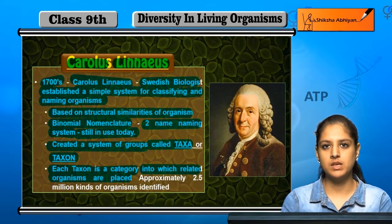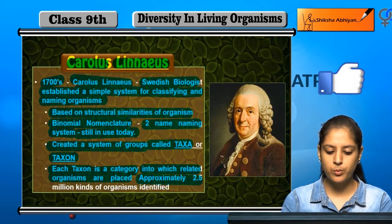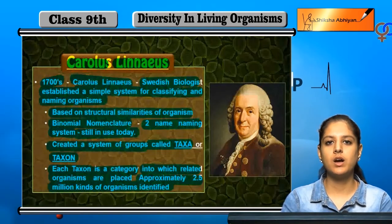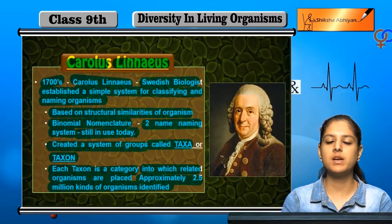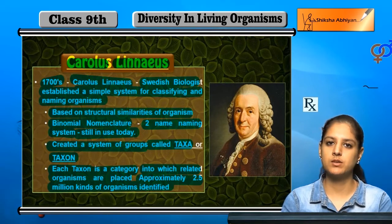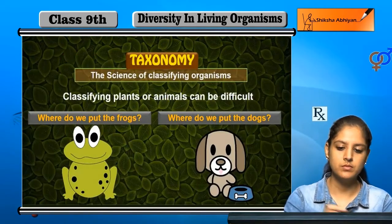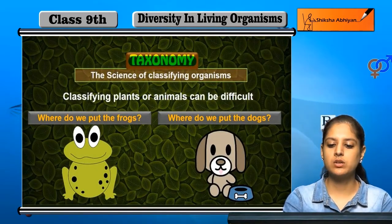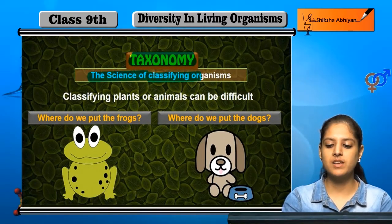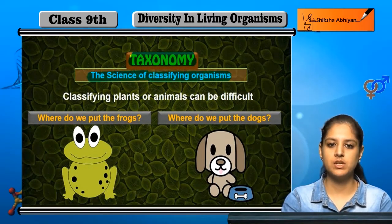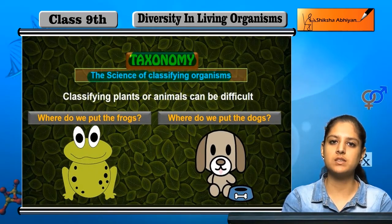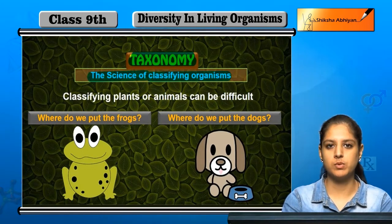Approximately 2.5 million kinds of organisms have been identified. The science of classifying organisms is called taxonomy. Classifying organisms based on their characteristics is what taxonomy is all about.